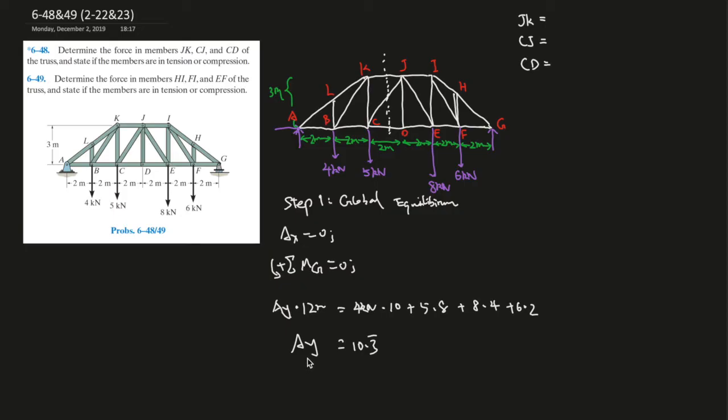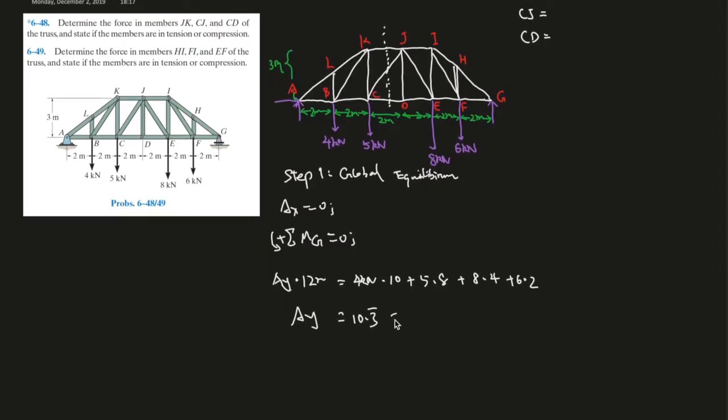So everything else is going to the positive. We know that AY is the only force that can counteract this force. So we can just set AY at one side of the equation and the rest of it equals the others. So AY is how many meters? One, two, three, four, five, six. So 12 times 12 meters. And equals 4K times 10, plus 8 times 4 plus 6 times 2.